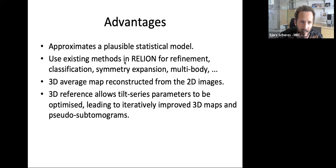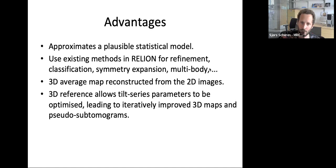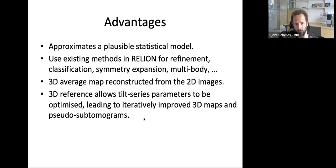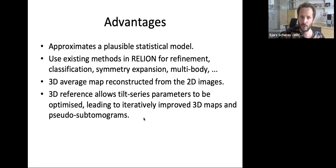After refinement, you can reconstruct your 3D subtomogram average map by going back to the original 2D tilt series images. The modifications to RELION refine to deal with this 3D CTF model — which now takes into account the effects of the 3D reconstruction algorithm — were done by Kino. Jasenko then adapted his algorithms for Bayesian polishing and CTF refinement, previously written for single particle analysis, to now work with these pseudo-subtomogram images.